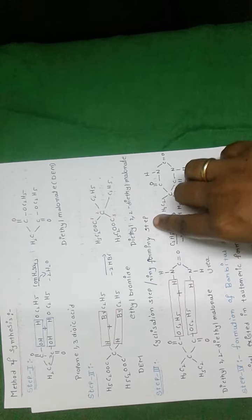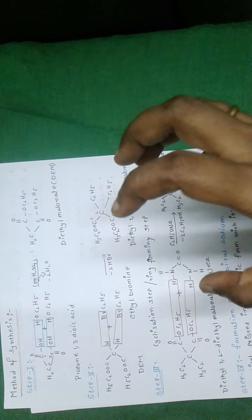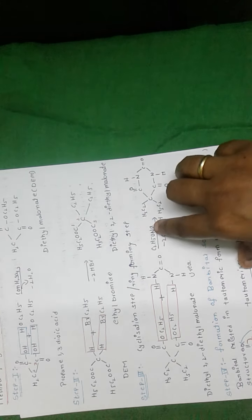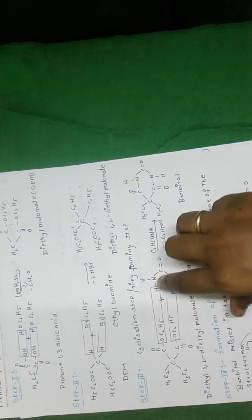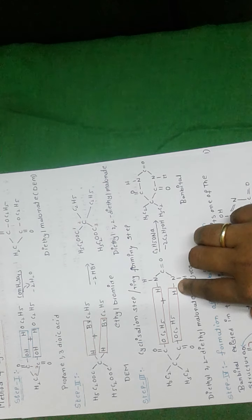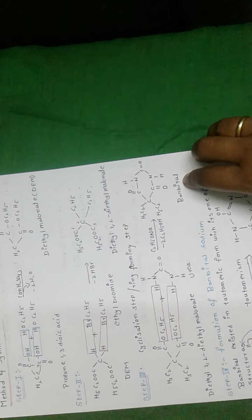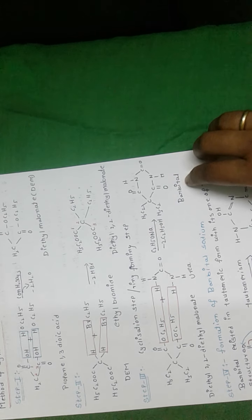Step number three is called the cyclization step or ring-forming step. The main mechanism involved in this step is nucleophilic acyl substitution reaction. Diethyl 2,2-diethylmalonate is reacted with urea in the presence of sodium ethoxide. The ethoxy group and hydrogen are eliminated in the form of ethyl alcohol, and the final product is barbital.